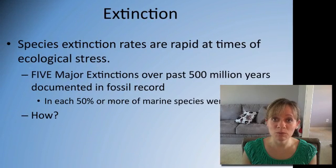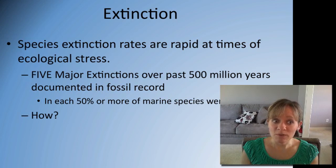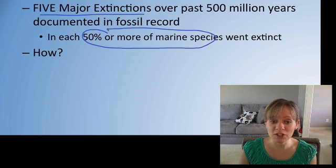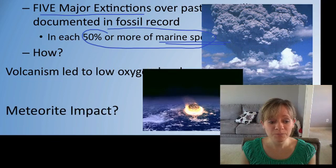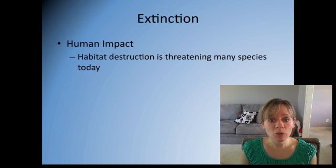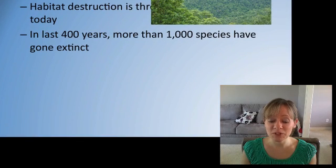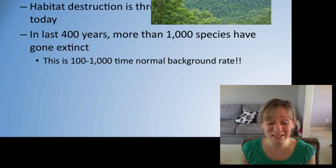Let's move into extinction. Evolution is always happening because the environment is always changing. Species extinction rates are sometimes rapid, especially in stressful or highly changing environments. There have been five major extinctions over the past 500 million years, in each of which 50% or more of marine species went extinct — caused by volcanism leading to low dissolved oxygen, or possibly meteorite impacts. Human impact has also contributed: in the last 400 years, more than 1,000 species have gone extinct, 100 to 1,000 times the normal background rate, raising the question of whether we are in a sixth major extinction event.